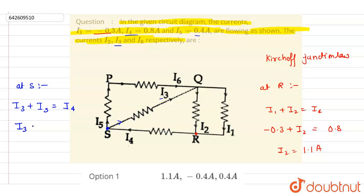If you see the i5 is 0.4 and i4 is 0.8, so i3 is 0.4 only.